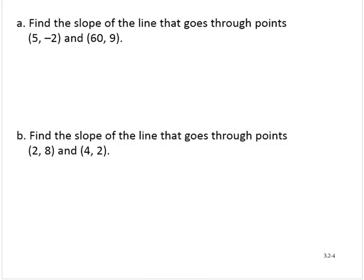Find the slope of the line that goes through the points (5, -2) and (60, 9). We can find the slope, usually abbreviated with the letter m, as the rise over the run. But if we are given ordered pairs, we tend to think of it as y2 minus y1 over x2 minus x1.